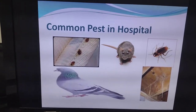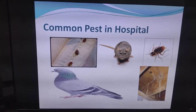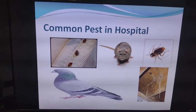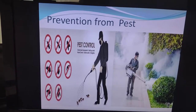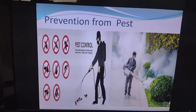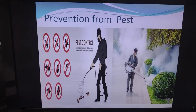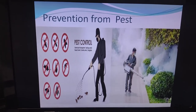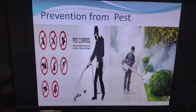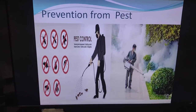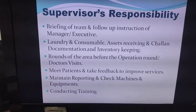Common pests in hospitals can be bugs, rats, and cockroaches. Pest prevention through pest control is important, and daily fogging also happens in the hospital. During the rainy season, dawn fogging also takes place.